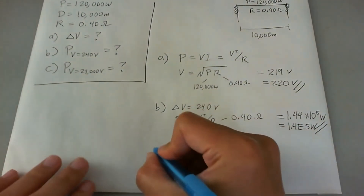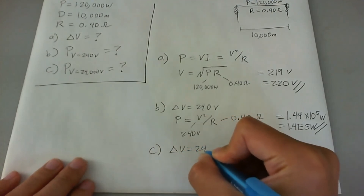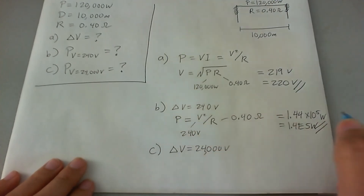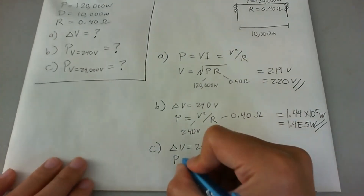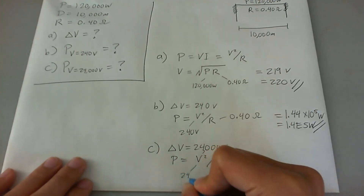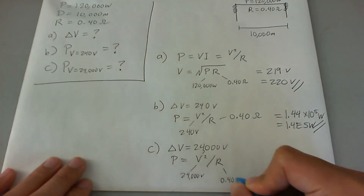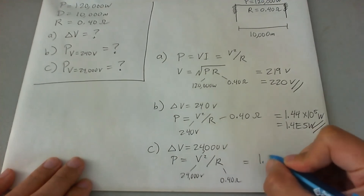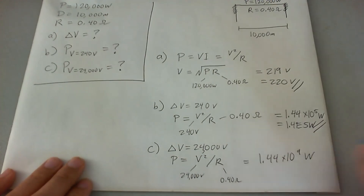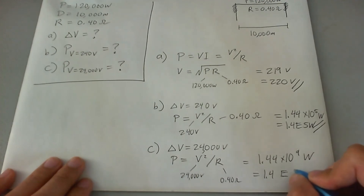For part C, same thing: what if instead the voltage drop is 24,000 volts? We use P equals V squared over R. That's 24,000 squared divided by 0.4 ohms, and we get 1.44 times 10 to the 9th watts, or in significant figures 1.4 times 10 to the 9th watts.